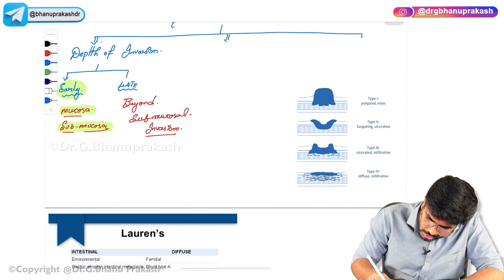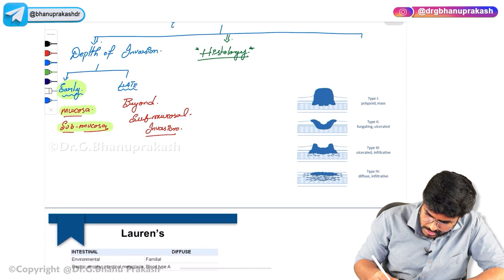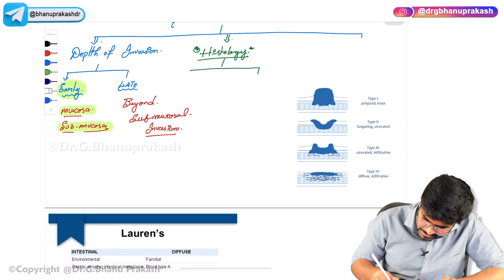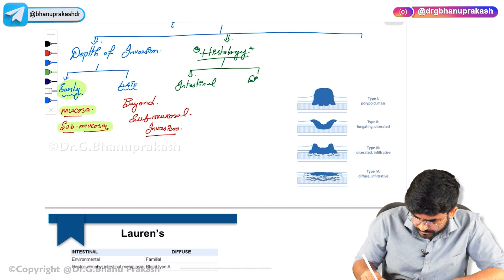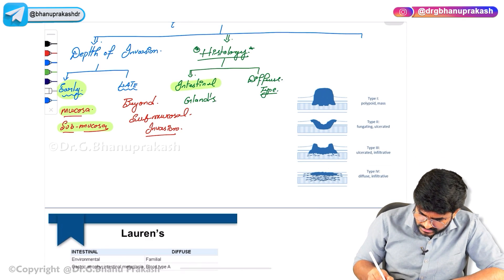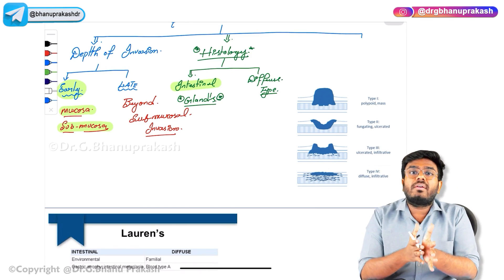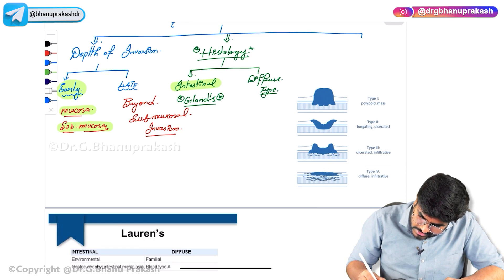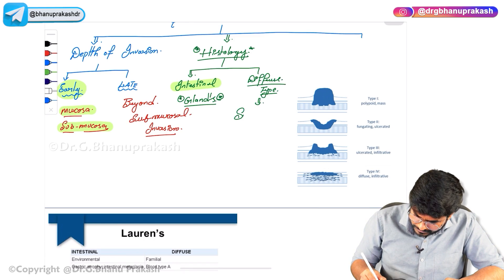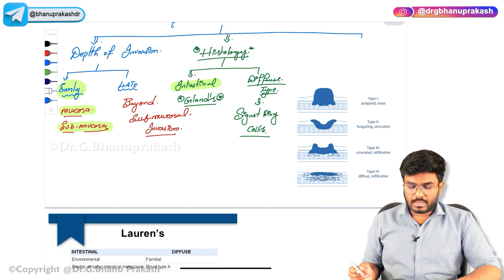Based on histological features, gastric adenocarcinoma is classified into two types: intestinal type and diffuse type. In intestinal type, mucus-producing glands will be present — that's why it's called intestinal. In diffuse type, what you will see is signet ring cells.